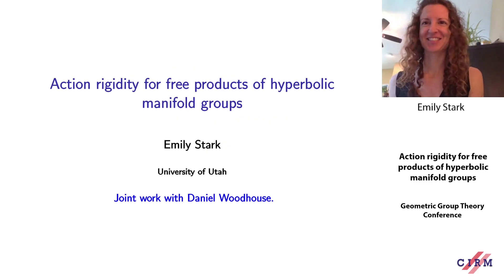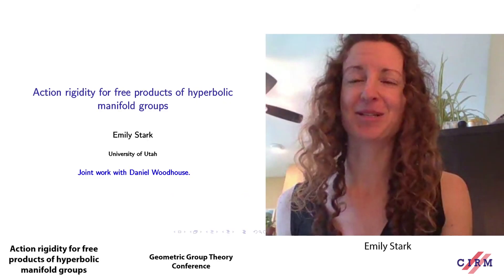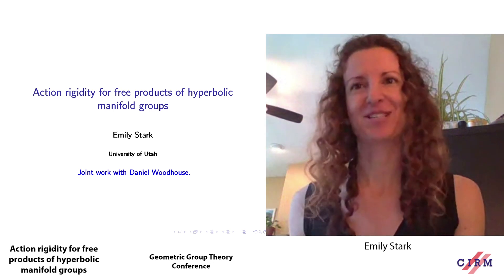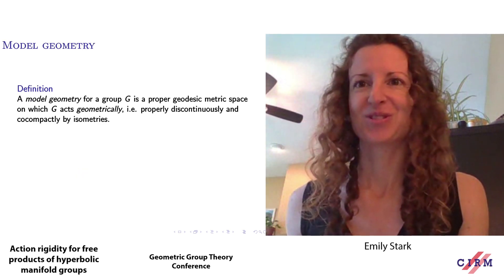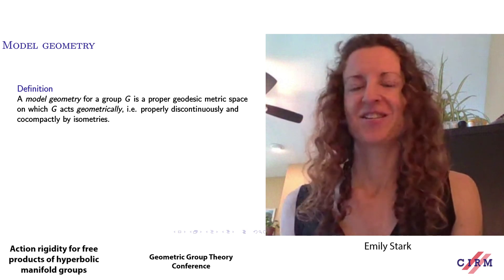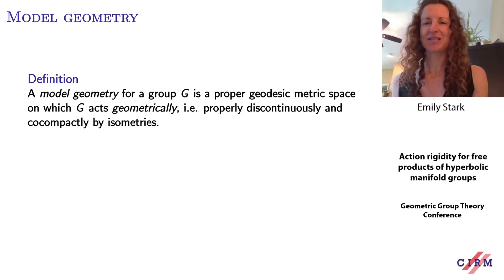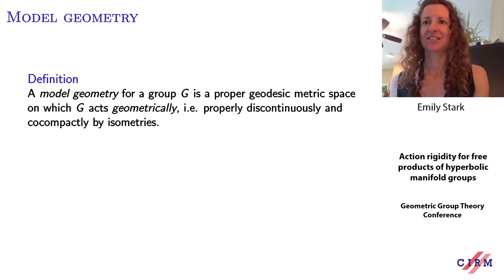Thank you very much for the invitation. Today I will discuss the rigidity that can occur when two groups act geometrically on the same space. This is joint work with Daniel Woodhouse. We say that a model geometry for a group G is a proper geodesic metric space on which the group G acts geometrically, meaning properly discontinuously and co-compactly by isometries.